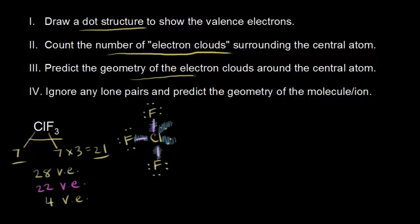In step three, we predict the geometry of those electron clouds. Using VSEPR theory, five electron clouds form a trigonal bipyramidal geometry because they repel each other as much as possible. The key question is where to put the lone pairs — since lone pairs take up more space than bonding electrons, they repel more. We put non-bonding lone pairs in the equatorial position to minimize electron pair repulsion.